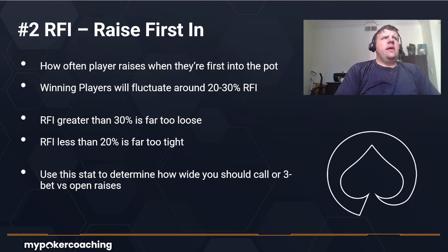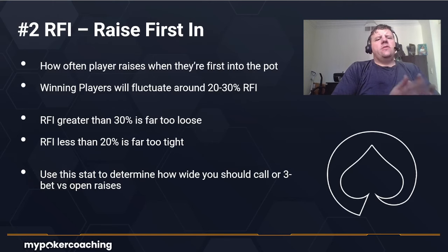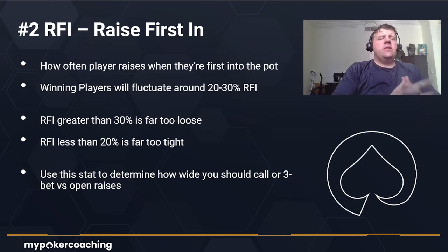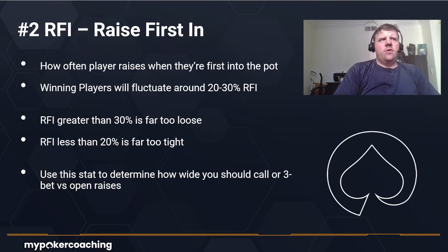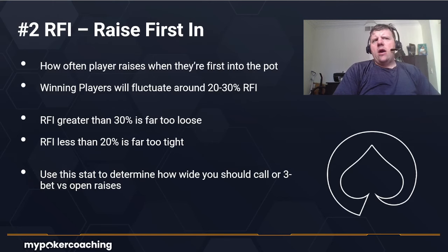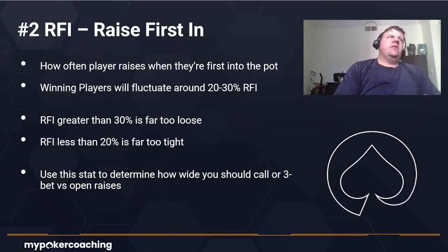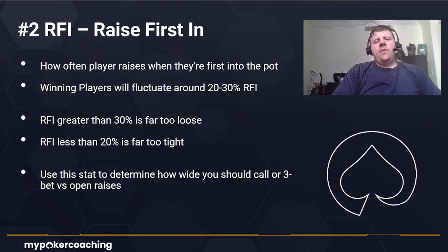Preflop stat number two is Raise First In, or RFI — how often a player raises when they're first to enter the pot. This doesn't count when someone has already opened or limped in front of you. Winning players will have an RFI around 20 to 30 percent. An RFI greater than 30 percent is far too loose, and less than 20 percent is far too tight. RFI is often paired with VPIP — you might say a player is '27/19,' meaning 27 percent VPIP and 19 percent RFI.